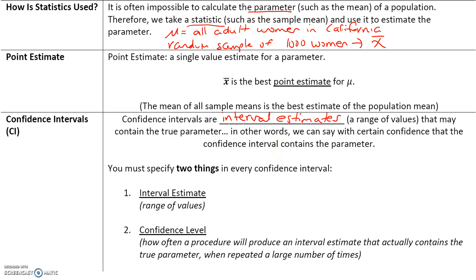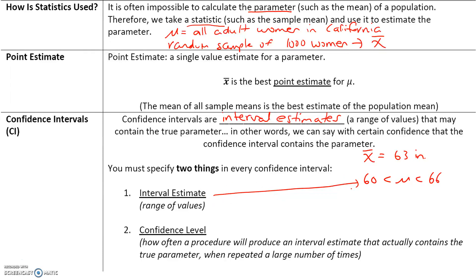Using our earlier example, let's say x-bar for the sample of 1,000 women is 63 inches. This won't be the exact height of all adult women in California, but it's a good estimate for the parameter. The mean height may not be exactly 63 inches, but maybe it's between 60 and 66 — give or take 3 inches each way to account for some error. This is called an interval estimate, a range of values that may contain the true parameter.